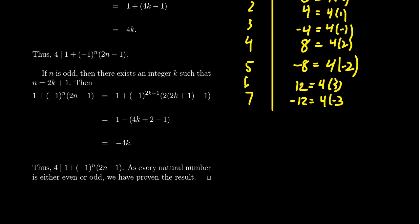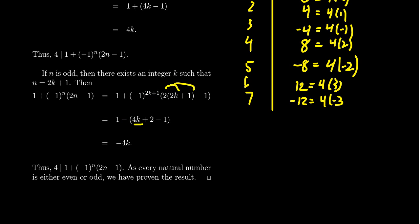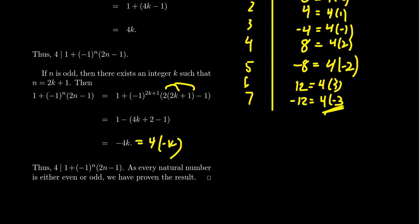Now consider the case where n is odd. Then there exists an integer K such that n equals 2K plus 1. Starting with our quantity 1 plus (-1)^n times (2n minus 1), replace each n with 2K+1. Since (-1) to an odd power is -1, the negative sign sticks around. Distributing the 2 gives 4K plus 2, so the expression becomes 1 minus (4K + 2 - 1) = 1 minus (4K + 1). Simplifying: 1 minus 1 cancels to give negative 4K, which is also a multiple of 4. Since every natural number is either even or odd, we've exhausted all cases, completing the proof.